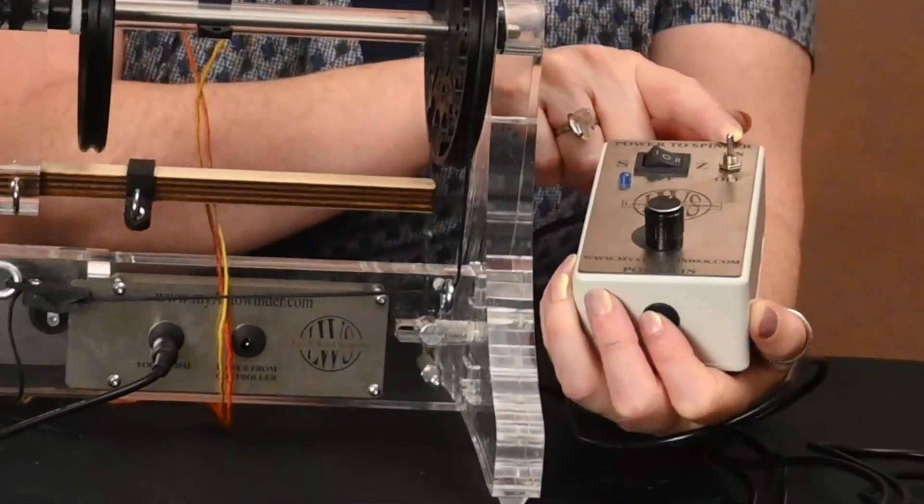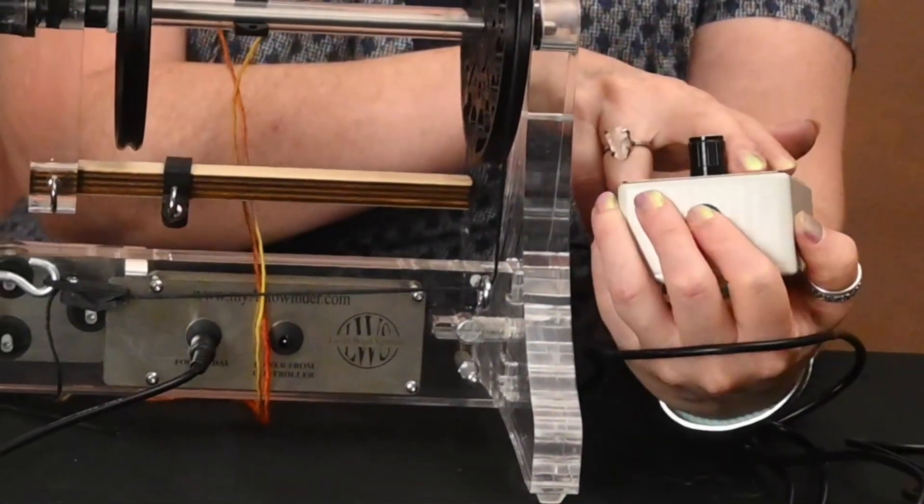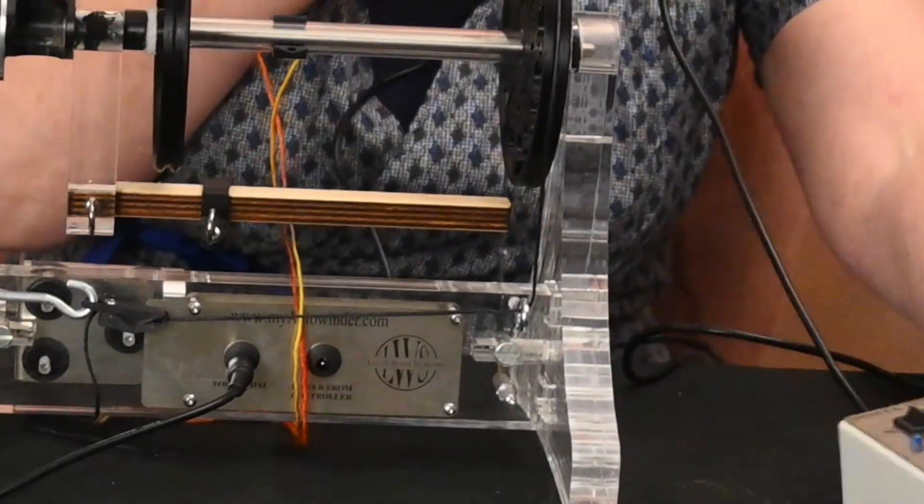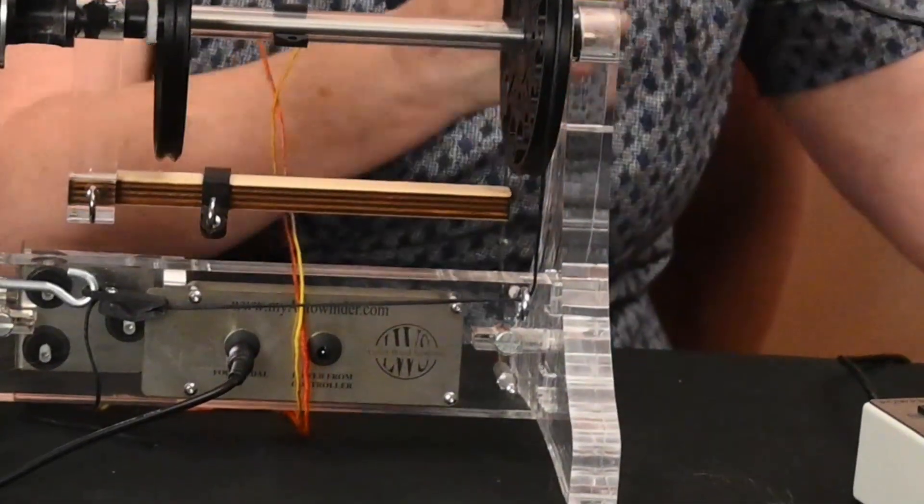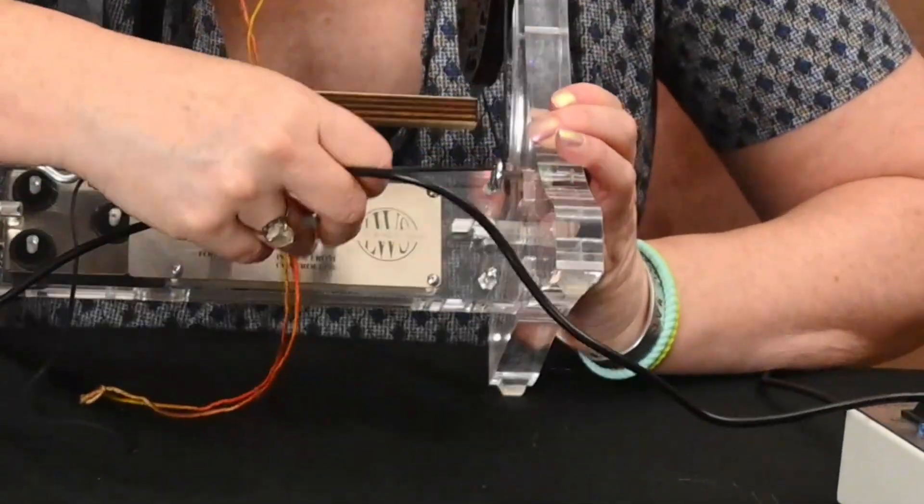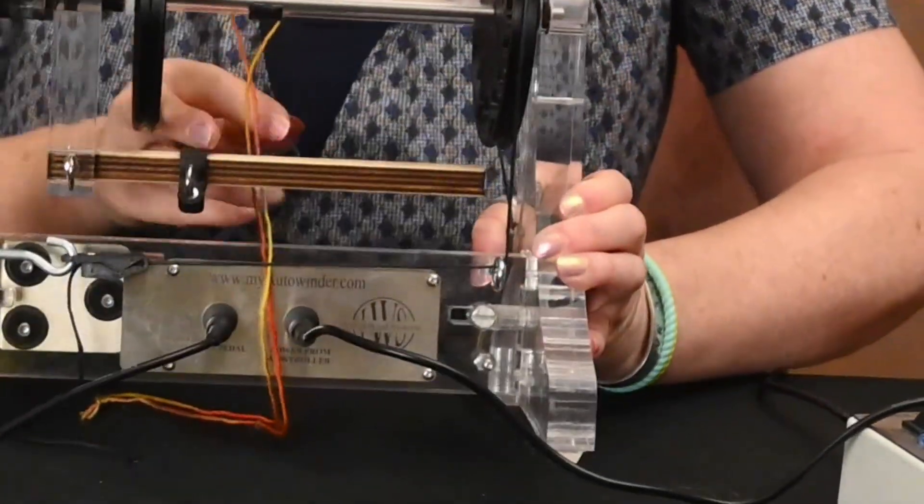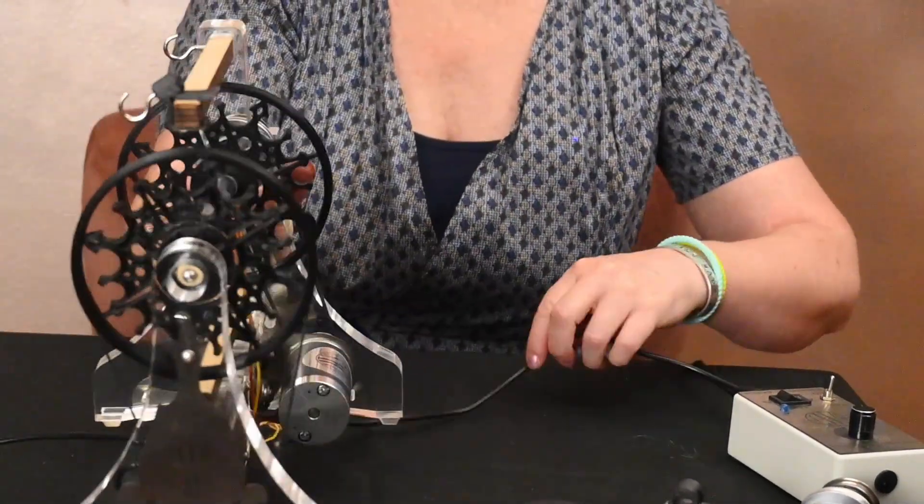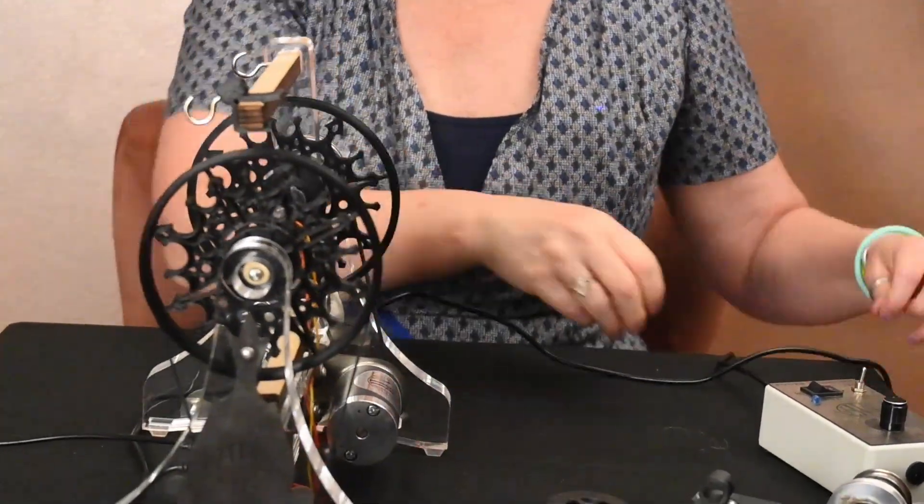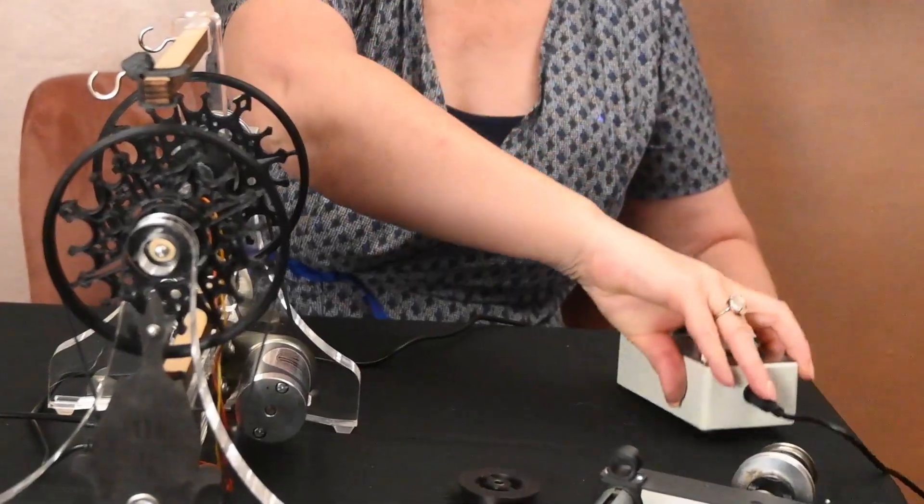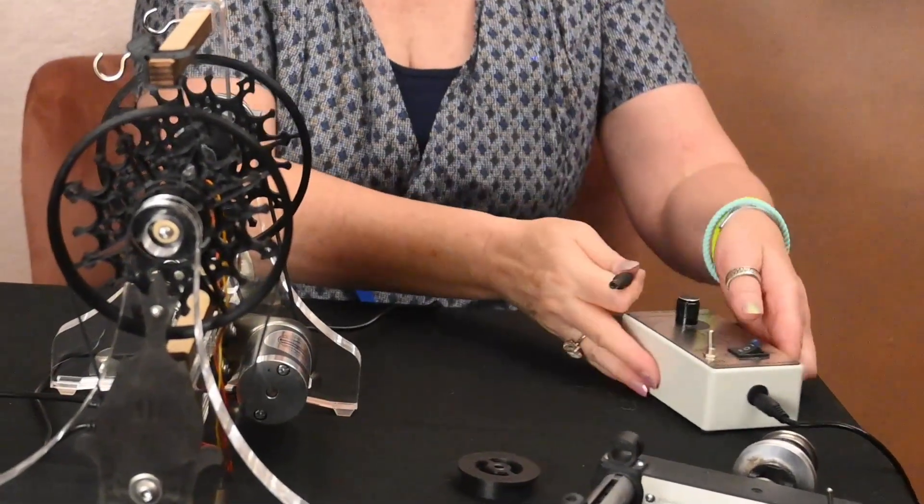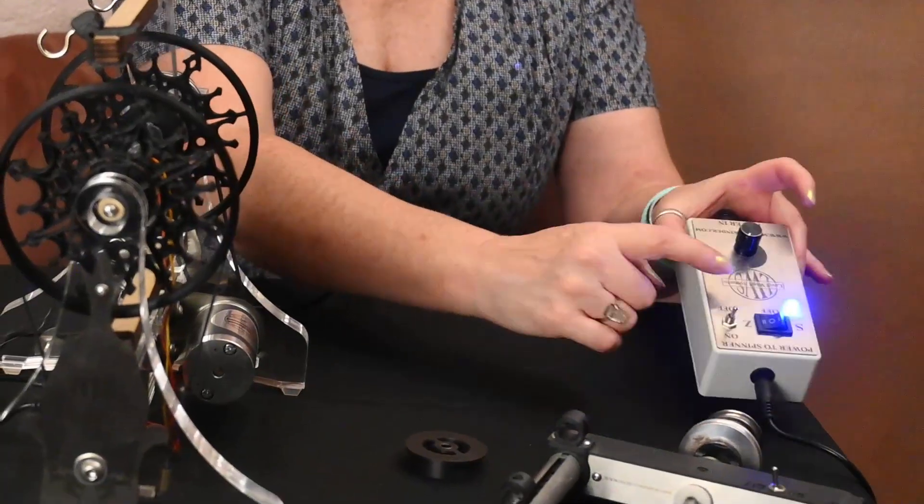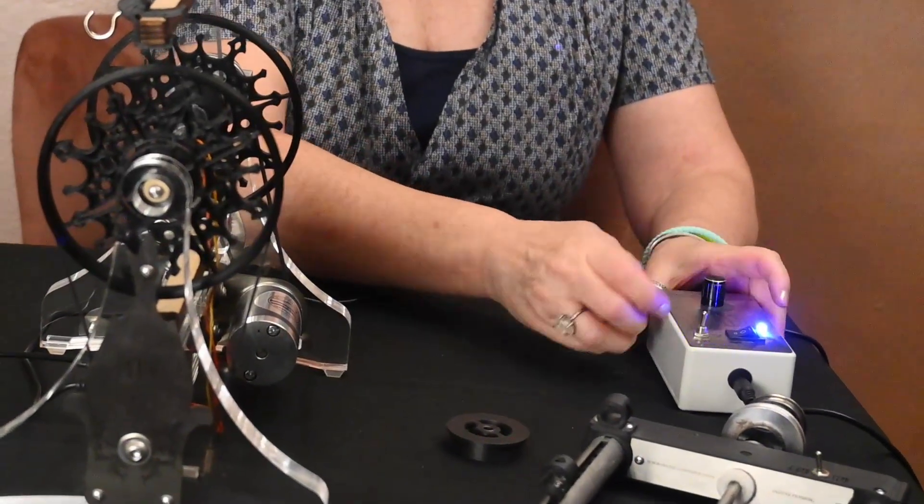I'm going to connect power to spinner first and then the power from source. The blue light indicates that it's ready to go.